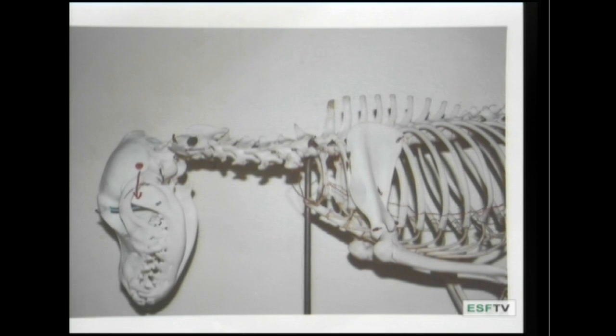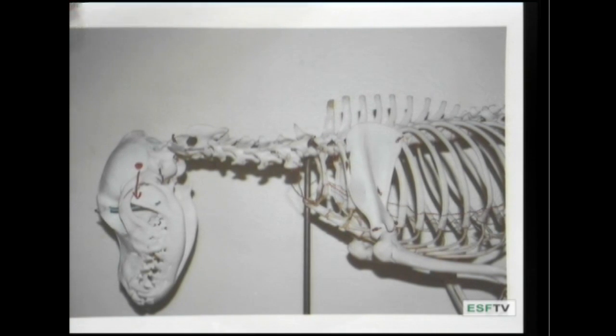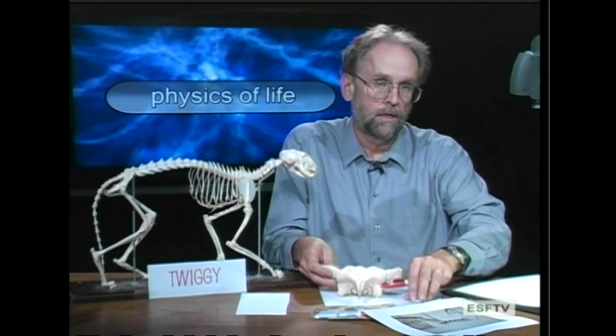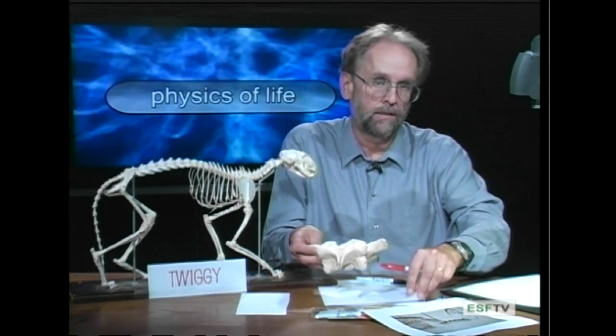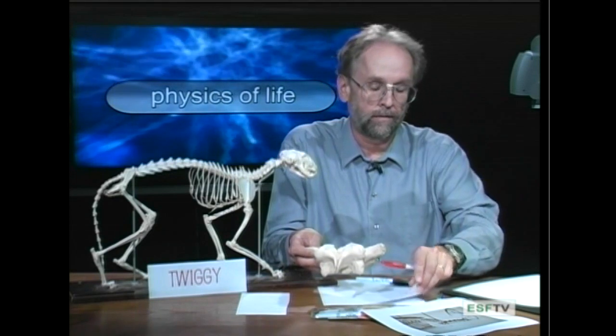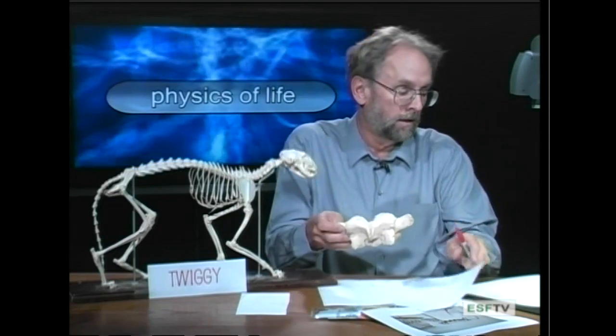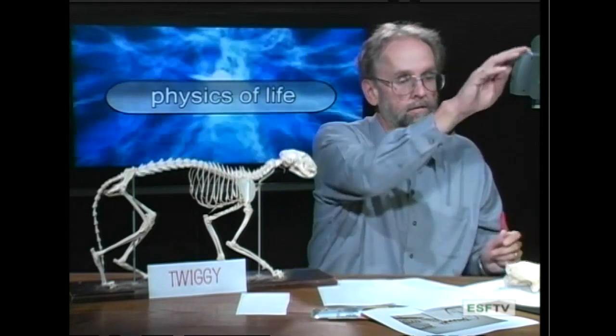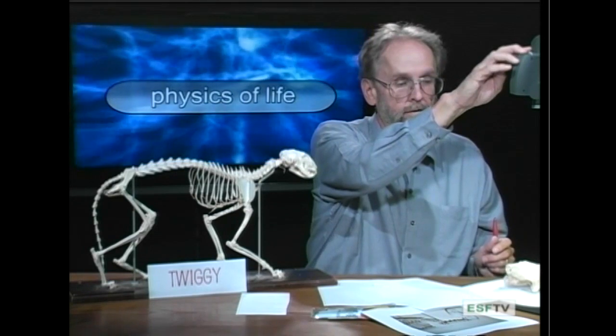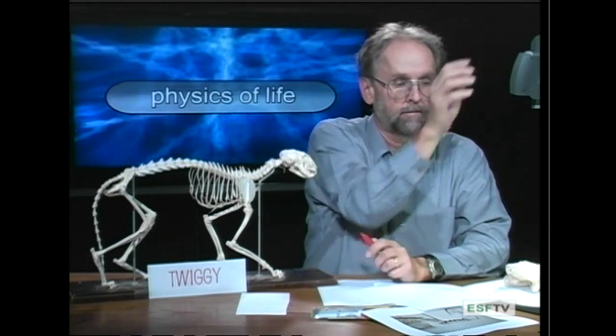This is where the principle of the cantilever comes in. You'll remember when we discussed the basic principles behind the cantilever — the idea is to take a load and redistribute it through a structure so that it can be supported effectively by strong structures. This is what's happening in the case of the cantilever made up by the vertebral column.